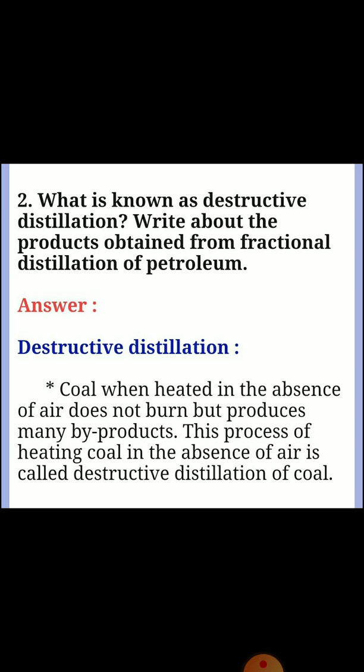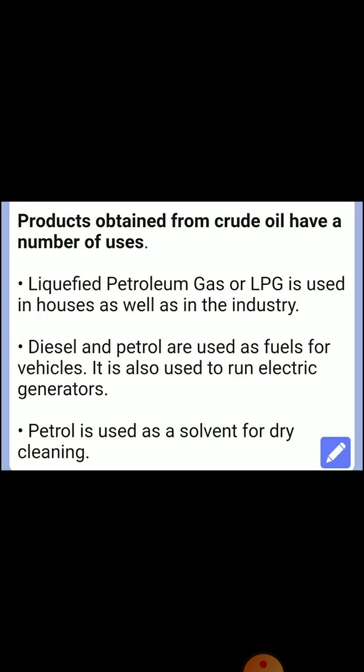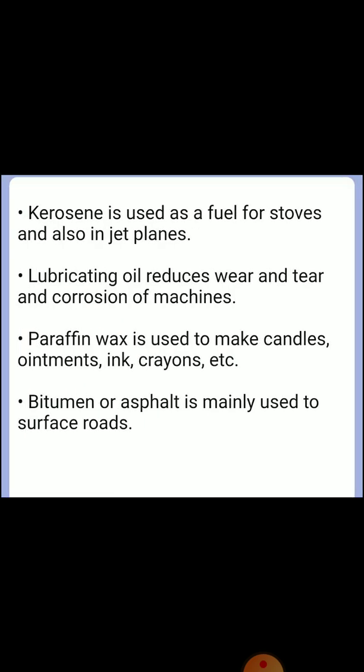Second question: what is known as destructive distillation? This process of heating coal in the absence of air is called destructive distillation of coal. Petroleum products and their uses: petrol and diesel are used as fuels for vehicles and to run electric generators. Petrol is used as a solvent for dry cleaning. Kerosene is used as fuel for stoves and in jet planes. Lubricating oil reduces wear, tear and corrosion of machines. Paraffin wax is used to make candles, inks and crayons. Bitumen or asphalt is mainly used to surface roads.